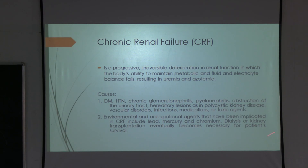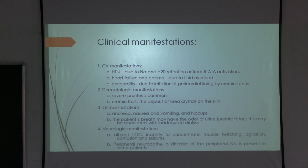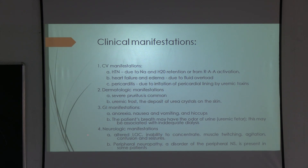Environmental and occupational agents implicated in CRF include lead, mercury, and chromium — all heavy metals. Clinical manifestations include cardiovascular: hypertension, heart failure, edema, and pericarditis. Dermatological: severe pruritus, uremic frost, and deposition of urea crystals on the skin. GI: anorexia, nausea, vomiting, and uremic odor (the patient's breath may smell like urine). Neurological: altered consciousness, inability to concentrate, muscle twitching, agitation, and rarely peripheral neuropathies.